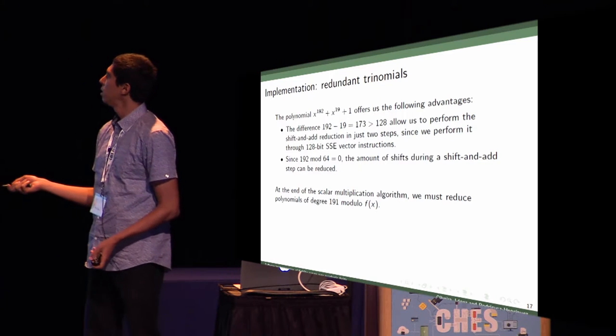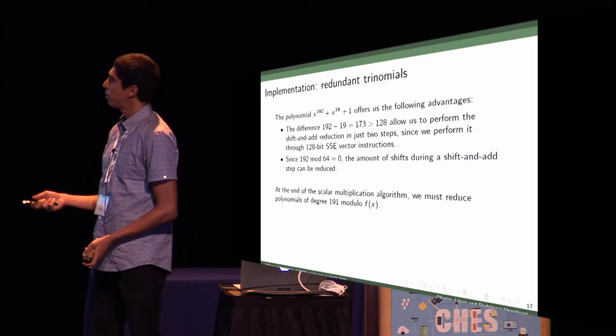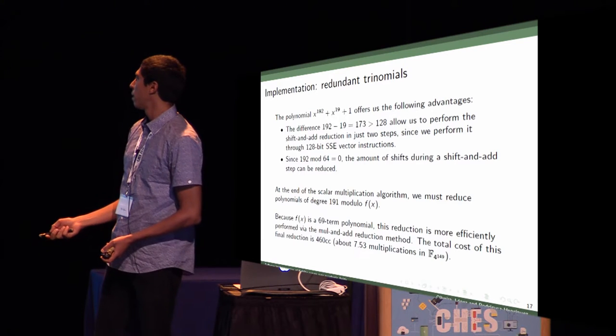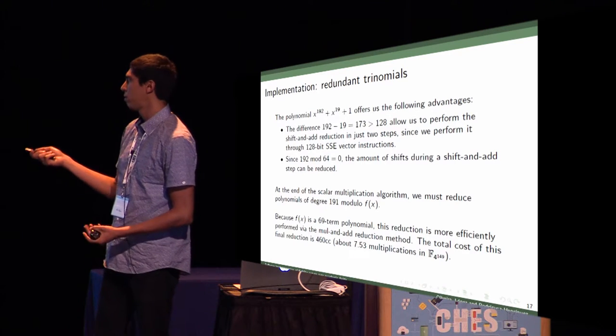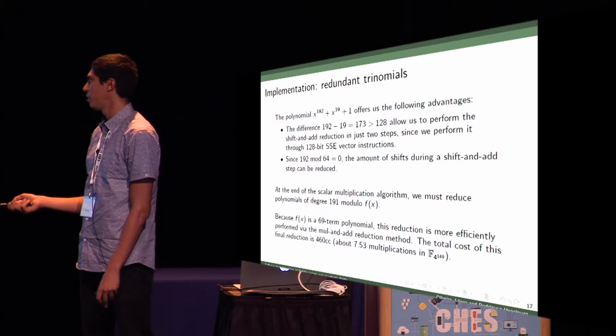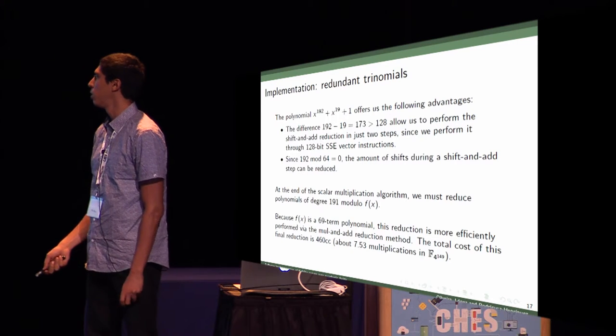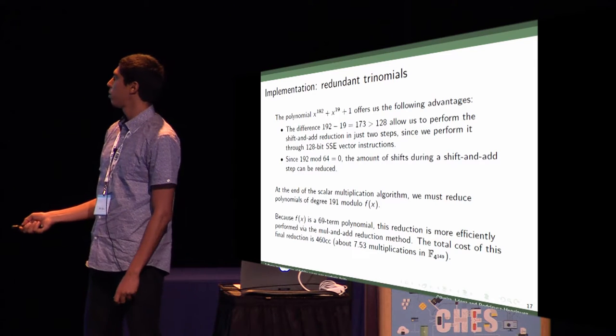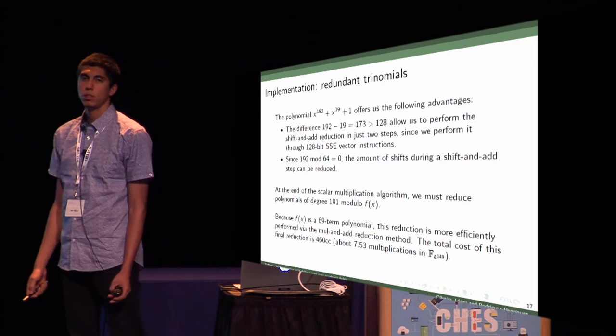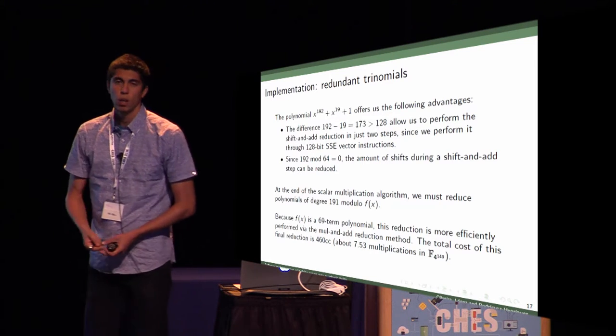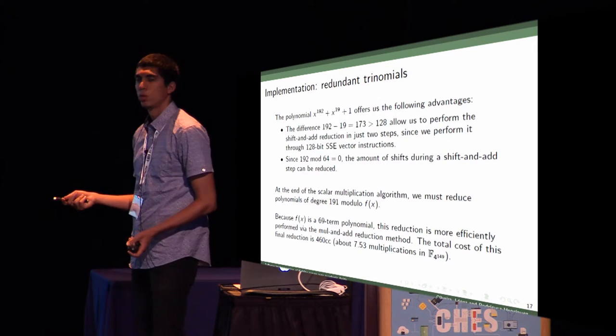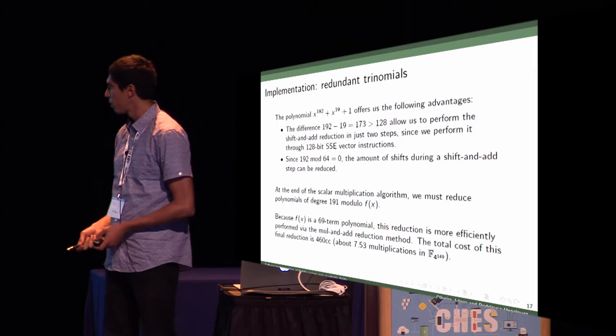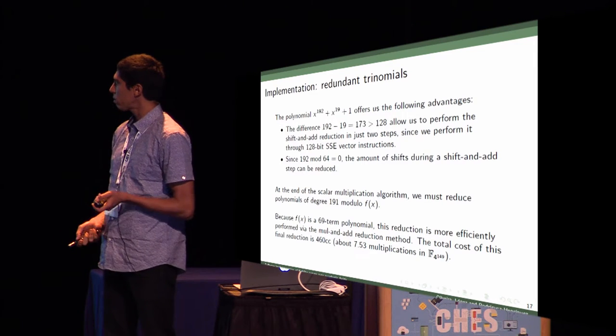At the end, as we see, you have to reduce this polynomial modulo F(X), which is this 69-term polynomial. Because there are many terms, it's better to perform this reduction via multiply and add reduction instead of shift and add. It costs about 7.3 multiplications, which is costly, but we have to do it only twice, in two coordinates of the final point Q equals kP.